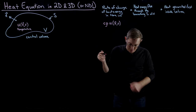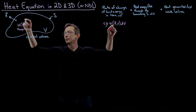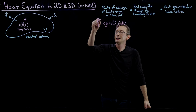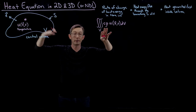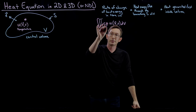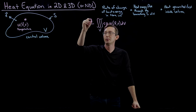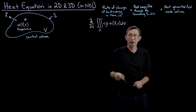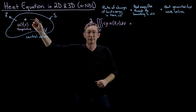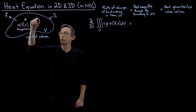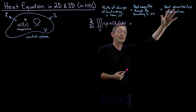Multiplying by dV gives the amount of heat energy in some little delta V piece, and integrating this over the entire volume gives the total heat energy in the volume — c times rho times temperature, integrated over V. We say the partial derivative with respect to time of this quantity equals the heat flux through the boundary plus any sources or sinks inside the volume. Even crazy stuff like a nuclear blast generating heat through E=mc² is handled by this, as long as the control volume is large enough.